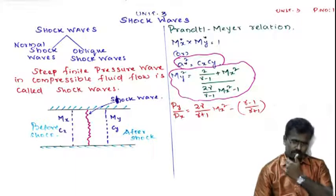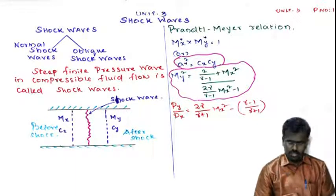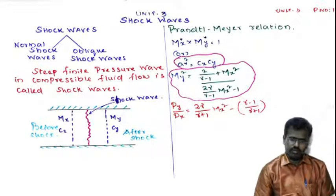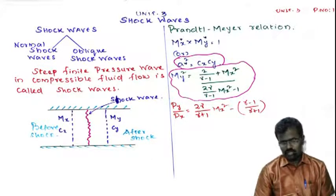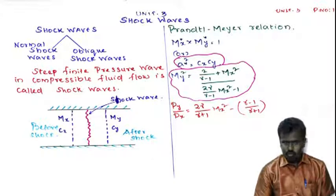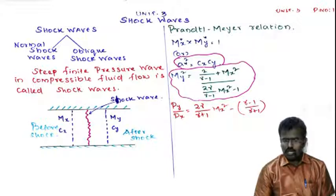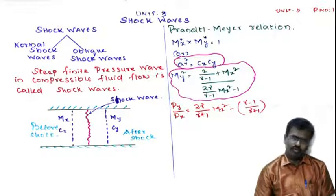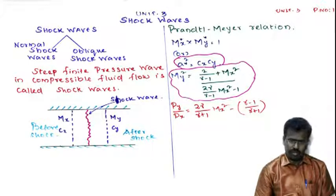Here we have a wavy line representing the shockwave with pressure indicated. Before the shockwave, the speed of the fluid is cx and the Mach number is mx. Similarly, after the shockwave, we call them my and cy. The formula for finding my is: my² = [2/(γ−1) + mx²] / [2γ/(γ−1) · mx² − 1].